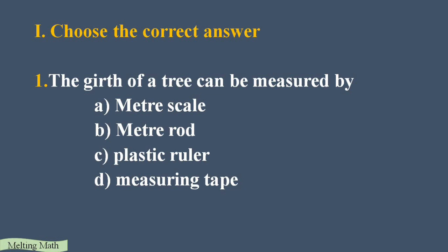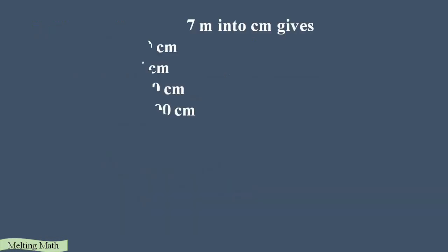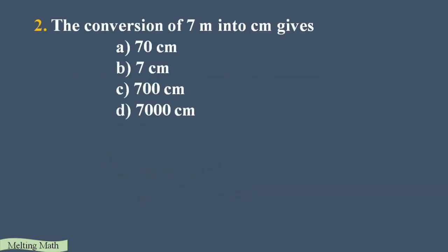Let's see the first question from the choose the correct answer section. The girth of a tree can be measured by which option? The options are meter scale, meter rod, plastic ruler, and measuring tape. The girth is the surrounding of the tree. We can measure the surrounding of a tree using the measuring tape, so the answer is measuring tape.